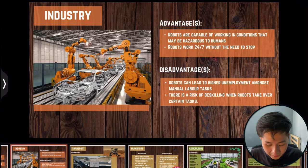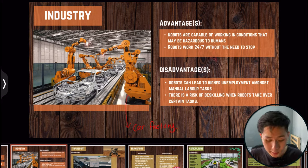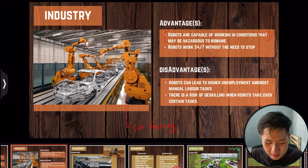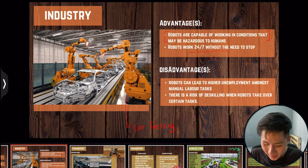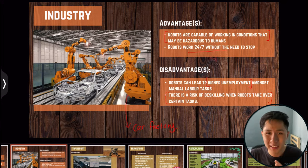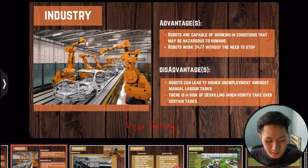Looking at applications of robotics — in the car industry, robots assemble cars instead of humans. An advantage is that robots can work in conditions hazardous to humans, and they can operate continuously without rest. A disadvantage is that robots lead to higher unemployment among manual labor workers, and there is a risk of de-skilling — humans may no longer know how to perform tasks that are entirely delegated to robots.